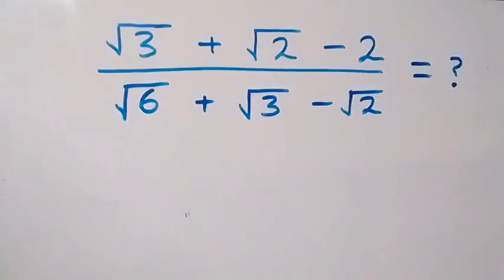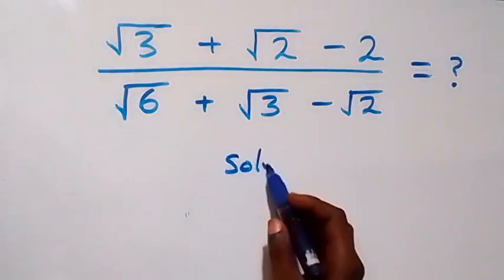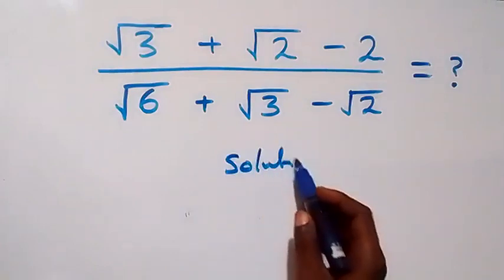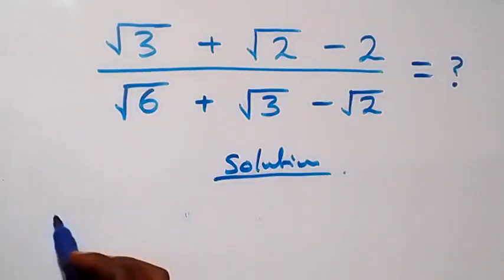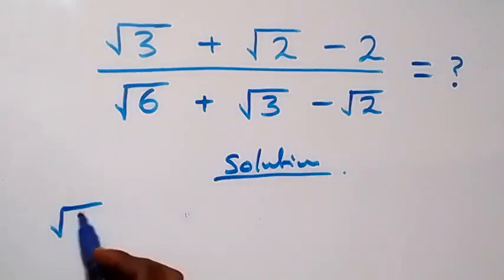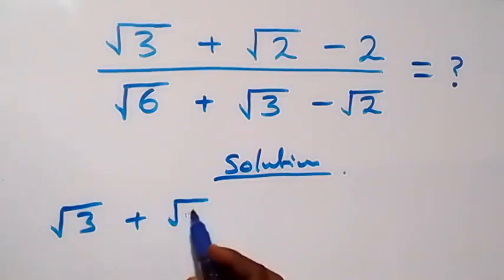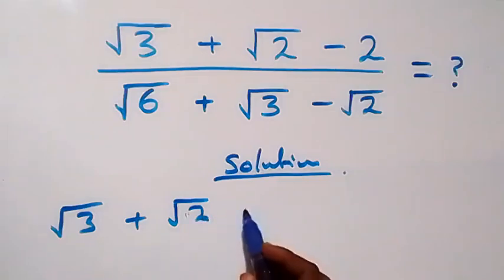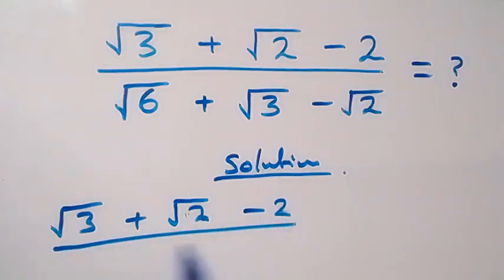Hello, you are welcome. How to solve this nice math problem involving square roots. What we have here is: the numerator is √3 + √2 - 2, and the denominator is √6 + √3 - √2.